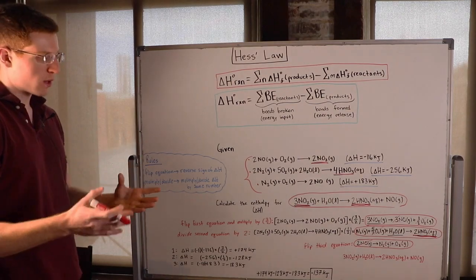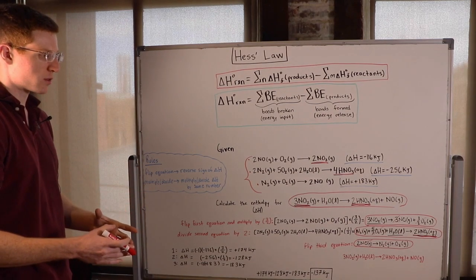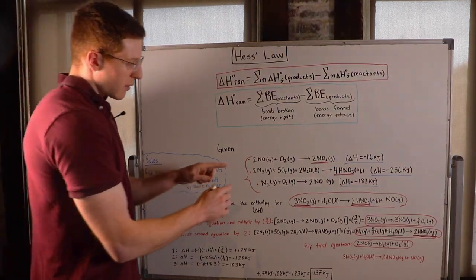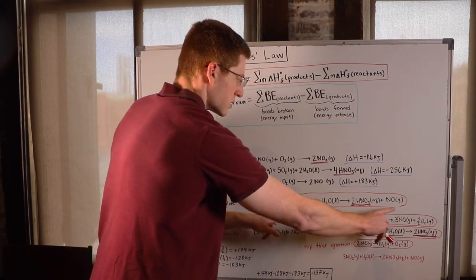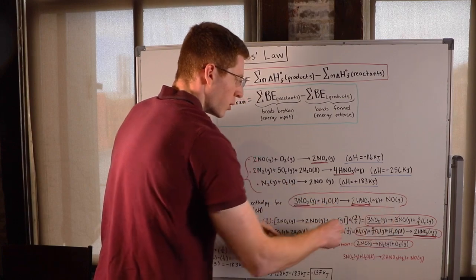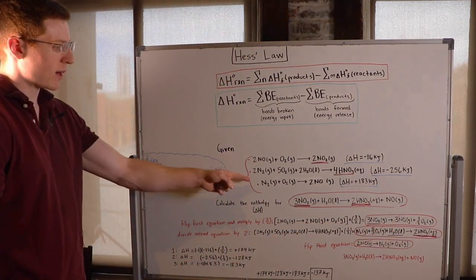So I've already got all the work written on the board here, but I want to carefully walk you through this. So I said I have to manipulate these equations that I was given to add them together to make them look like this. But what are the rules for manipulating these equations?